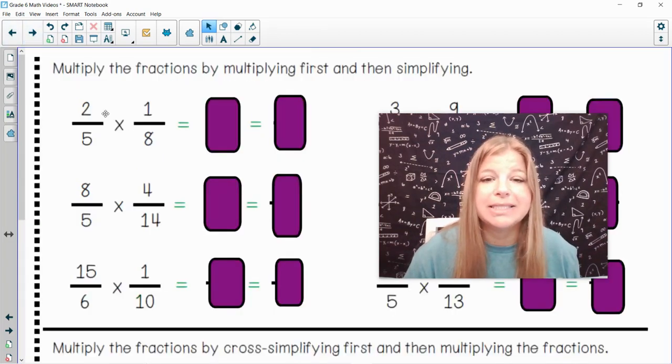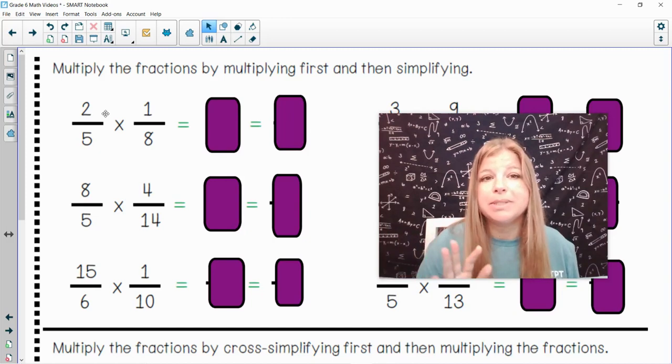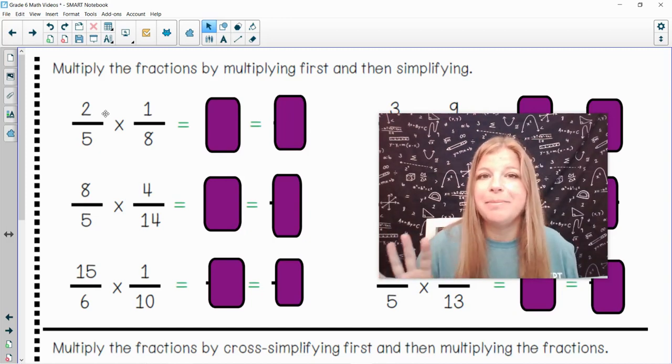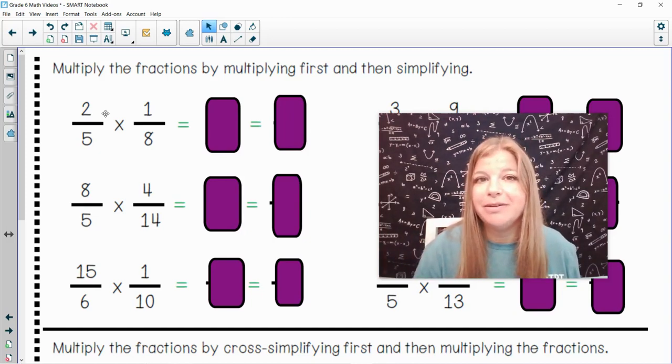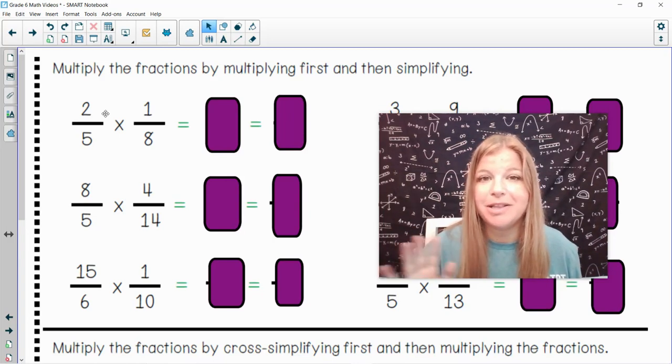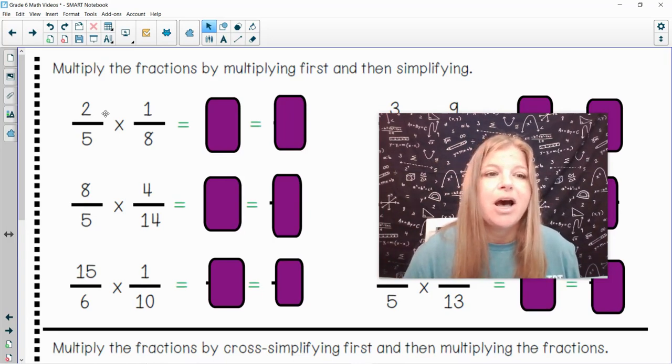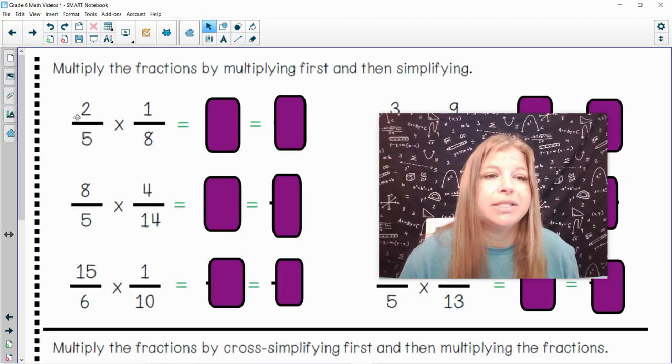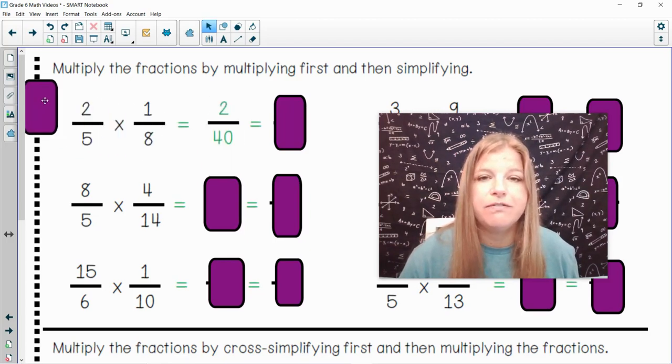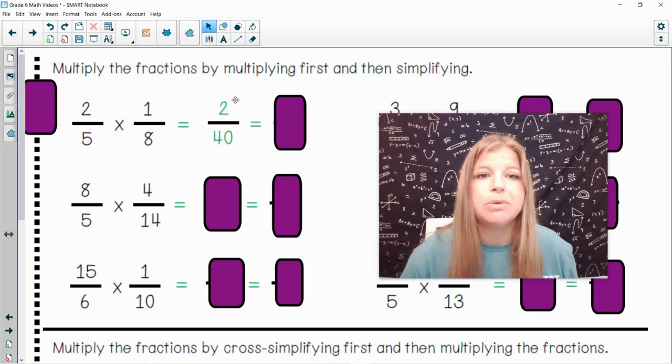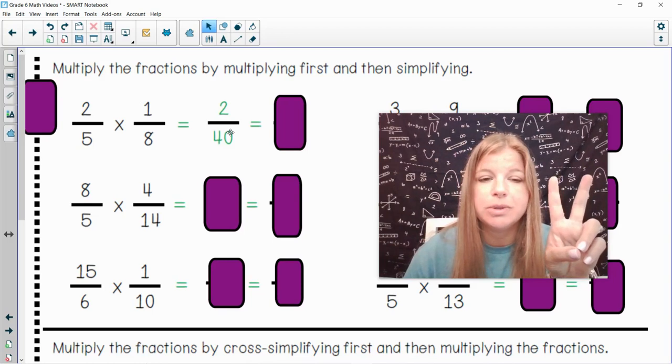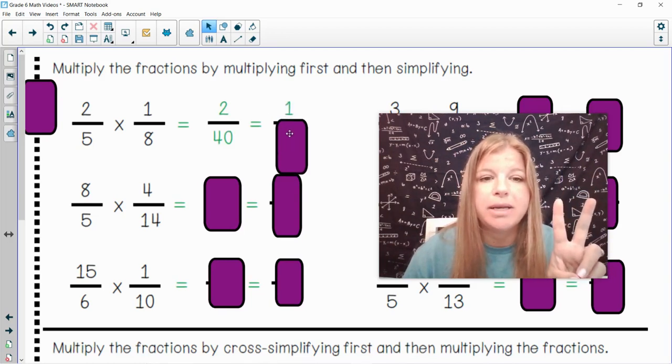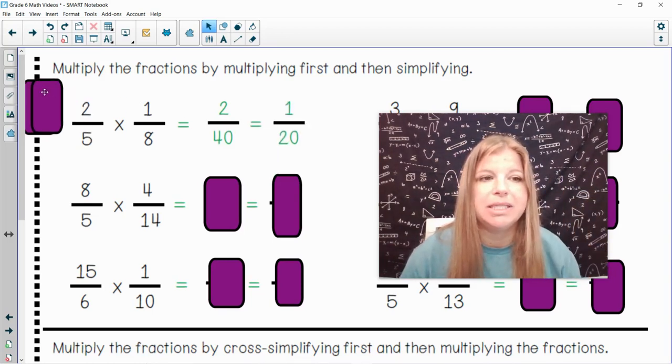Let's take a look at some practice together. I'm going to do the problems on the left with you, and then I'm going to reveal the problems on the right, and you're going to do those on your own, and then you're going to check your answers. So, 2 fifths times 1 eighth. We multiply straight across. 2 times 1 is 2. 5 times 8 is 40. Can I simplify 2 40ths? Absolutely. We can simplify both of them by 2. 2 divided by 2 is 1, and 40 divided by 2 is 20. So, my answer is 1 20th.